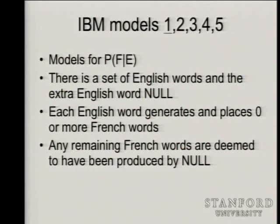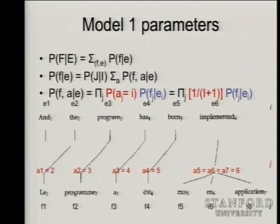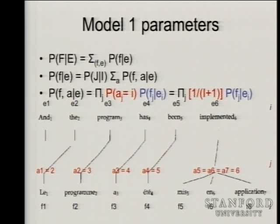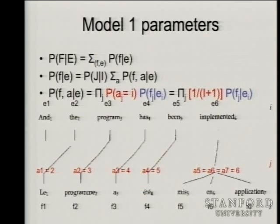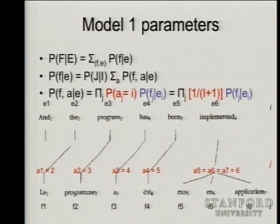Formally starting off for what we did for IBM model one, the overall picture we have is we have a lot of French and English parallel sentences. So we have a complete conditional probability of our corpus: the probability of all of our French stuff times the probability of all of our English stuff.